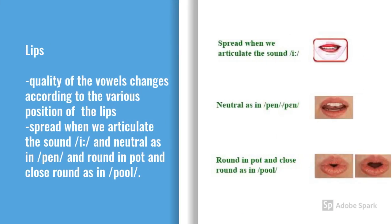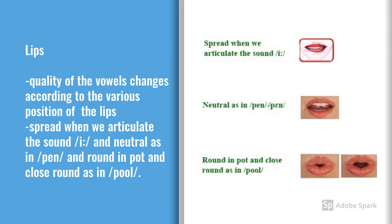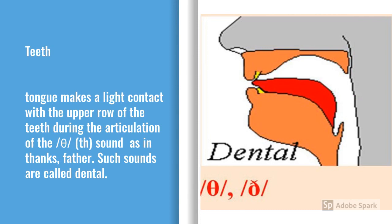Lips also play an important role in the production of speech sounds. The quality of vowels changes according to the various positions of the lips. The lips can be spread when we articulate the sound 'E', neutral as in 'pen', and round as in 'pot', and close round as in 'pool'.